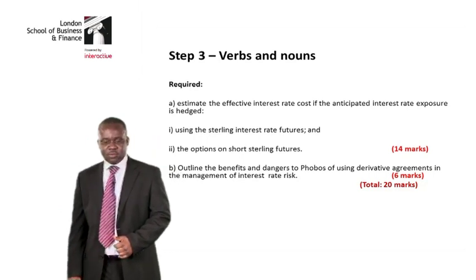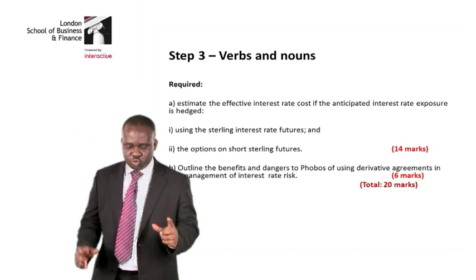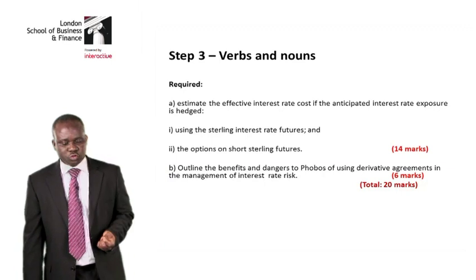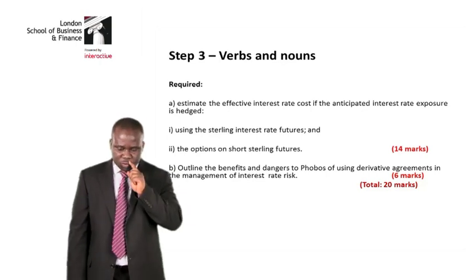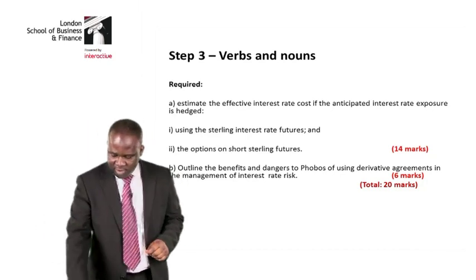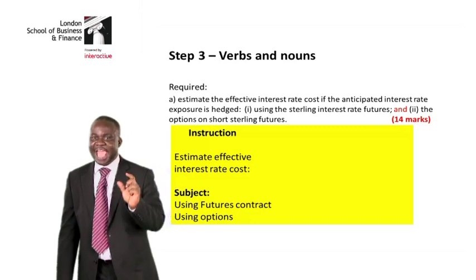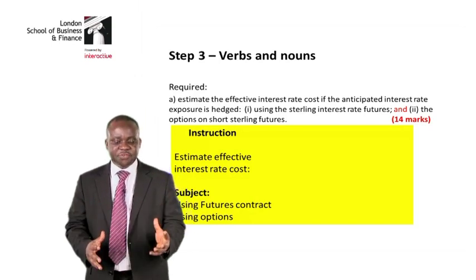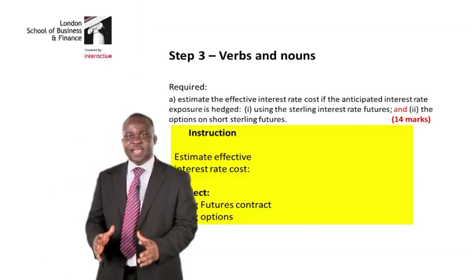Let's go into details. If you take question requirement A, we are expected to estimate the effective interest rate costs using the futures contract and the options contract. So the instruction — the verb — is 'estimate'.